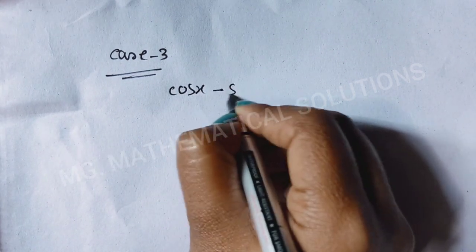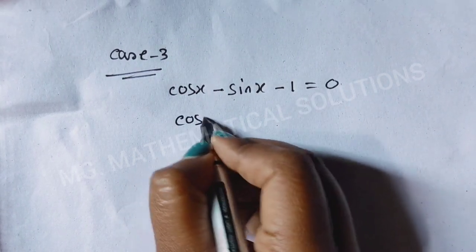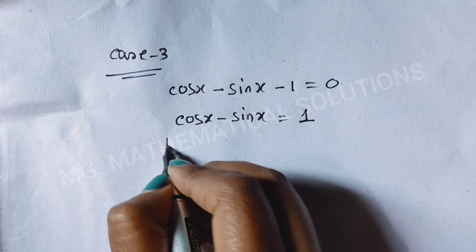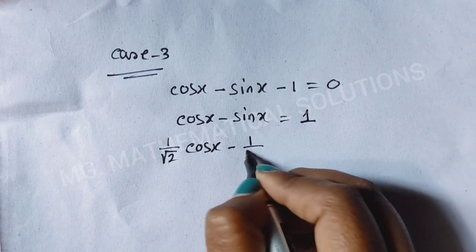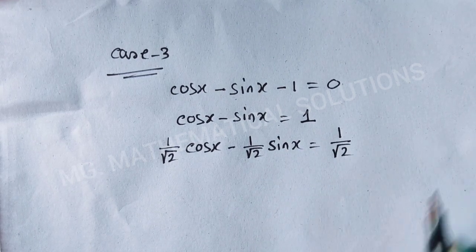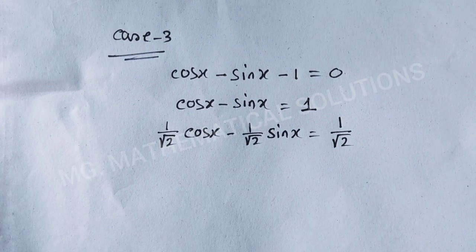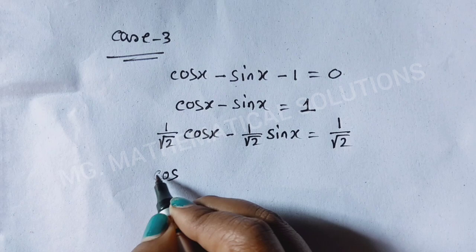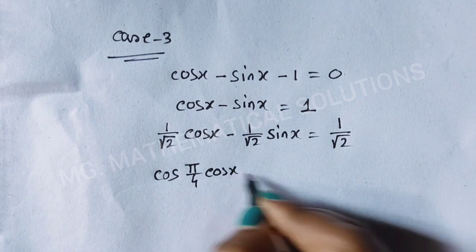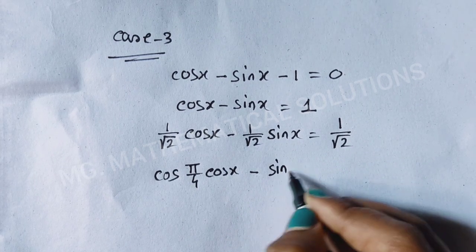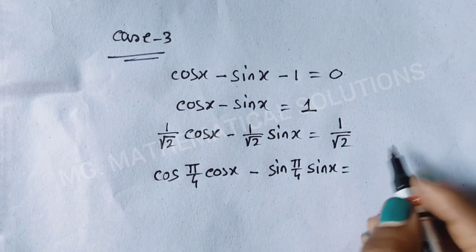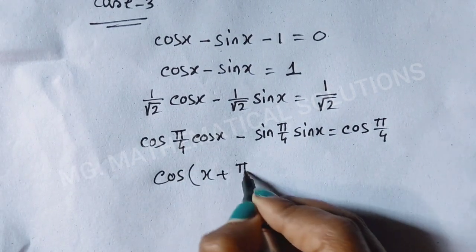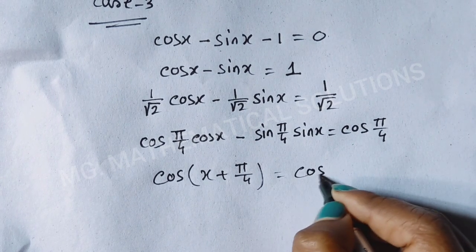Now we solve Case 3: cos x − sin x = 1. Dividing both sides by √2 gives (1/√2)cos x − (1/√2)sin x = 1/√2. Recognizing 1/√2 = cos(π/4) and 1/√2 = sin(π/4), this becomes cos(x + π/4) = cos(π/4).